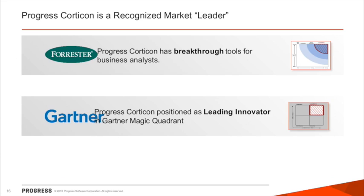We are a recognized market leader. Forrester has talked about how Corticon was a breakthrough tool for the business analyst — because of the very intuitive graphical interface, business analysts are able to quickly adopt and utilize it. And when Gartner was doing magic quadrants, we were listed in the leader section. So it's not just us saying it — when we go to those independent analysts, they too have been able to see why Corticon is such a great solution.